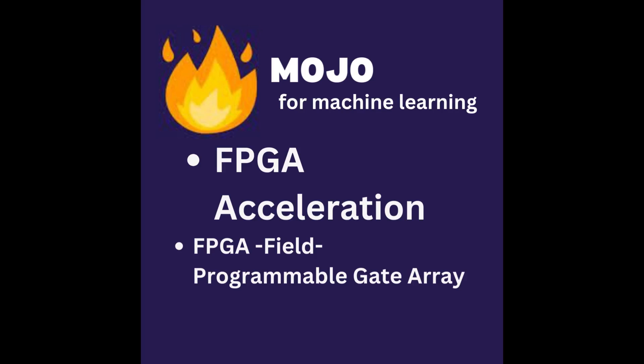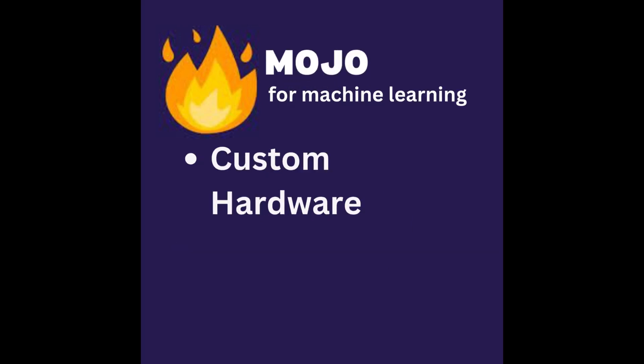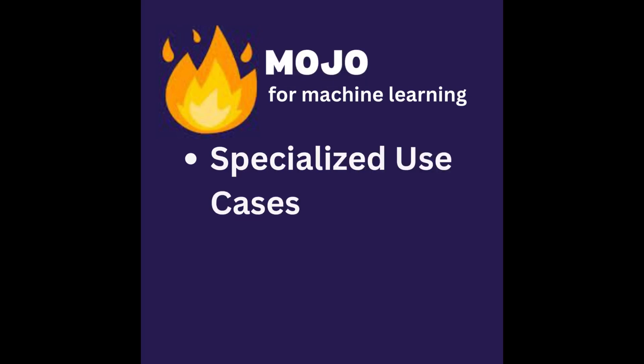FPGA stands for field programmable gate array. It is basically used for deploying machine learning models and has custom hardware. FPGA devices can be customized to perform specific machine learning operations effectively, which is especially beneficial for edge computing and IoT applications. Mojo also has specialized use cases. Mojo is more relevant for engineers and developers working on hardware accelerations for machine learning, rather than data scientists or machine learning model developers.